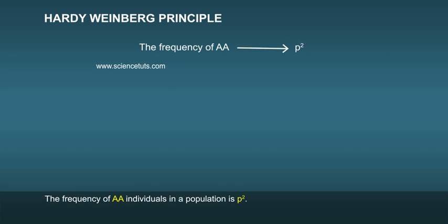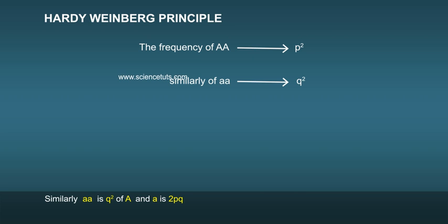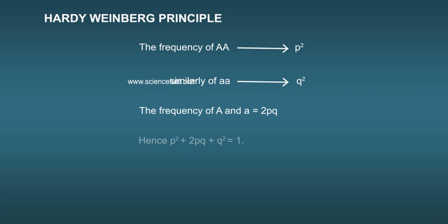The frequency of AA individuals in a population is p-square. The probability that an allele A with a frequency of p appears on both chromosomes of a diploid individual is the product of probabilities, that is p-square. Similarly, aa is q-square and Aa is 2pq. Hence, p² + 2pq + q² = 1. This is binomial expansion of (p + q)².